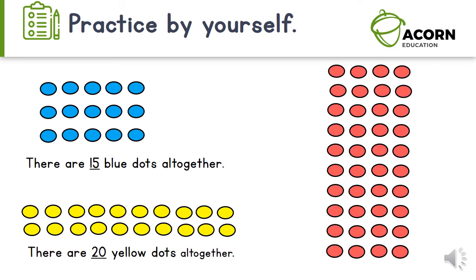How many pink dots are there altogether? There are forty pink dots altogether. Well done. You are a superstar. I hope you enjoyed today's counting lesson. We will see you next time. Bye-bye.